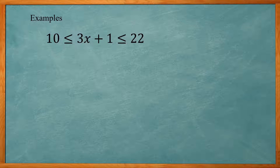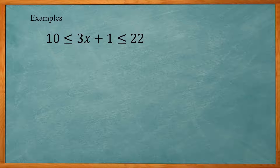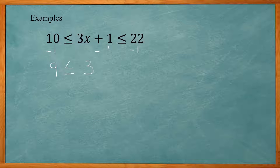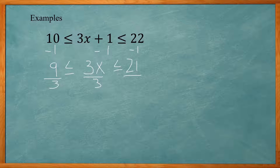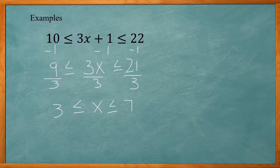Here's another example — a compound inequality: 10 is less than or equal to 3x plus 1, which is less than or equal to 22. You do the same steps to all three parts. Subtract 1 from the left, middle, and right to get 9 less than or equal to 3x less than or equal to 21. Then divide all three parts by 3, giving x is greater than or equal to 3 and less than or equal to 7.